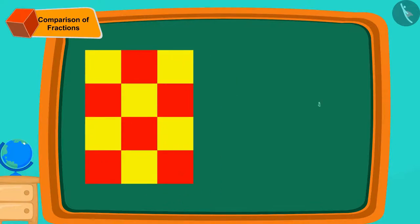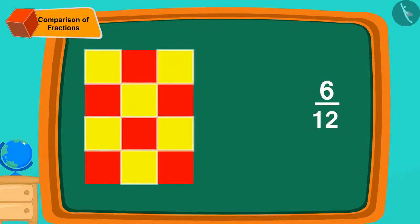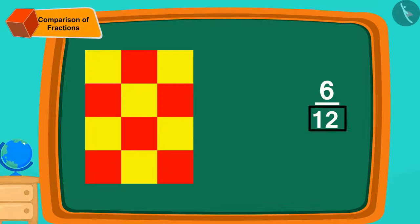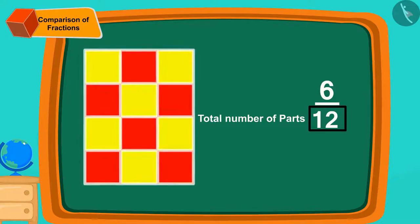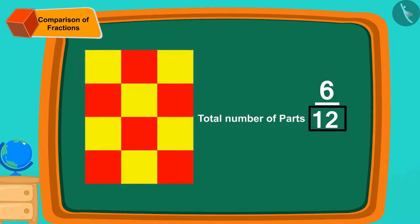Let us write it as a fraction. Yellow-coloured sections are 6 twelfths of the design. Children, you remember right? The number 12 tells us that our total cloth is divided into 12 equal parts.